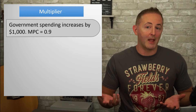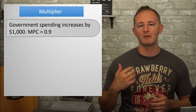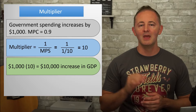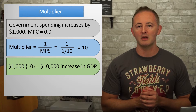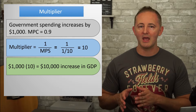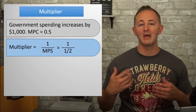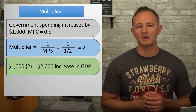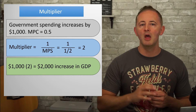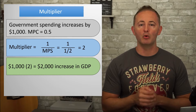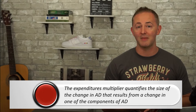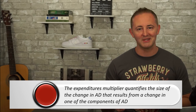Now, to use the multiplier, just take the initial increase in spending and multiply it by the multiplier. And this will give you the maximum total increase in GDP. In our example, $1,000 times 10 equals $10,000. To illustrate how important the size of the multiplier and in turn the MPC is, imagine that instead of 0.9, the MPC was only 0.5. That means the MPS is also 0.5, and the multiplier is 1 over 1/2, so 2. The government spends the same $1,000 buying data services from Chandler, but this time the total maximum increase in GDP is only $2,000. This illustrates that the expenditure multiplier quantifies the size of the change in aggregate demand that results from a change in one of the components of aggregate demand.